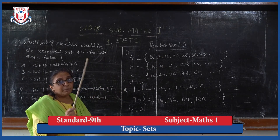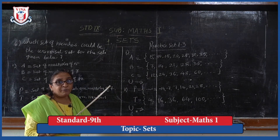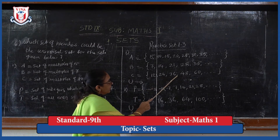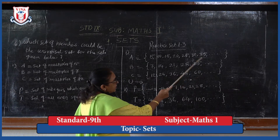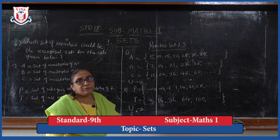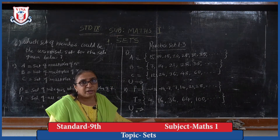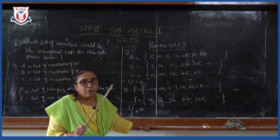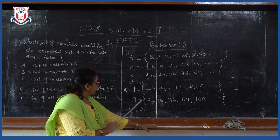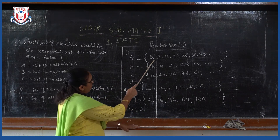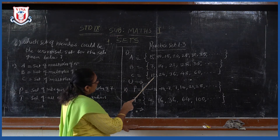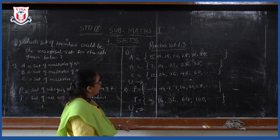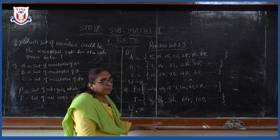And C is a multiple of 12, so 12, 24, 36, 48, 60. If you know the tables, very easily you can write at least 4 to 5 elements. Now, all these sets belong to what? All these are natural numbers — they come in the set of natural numbers.